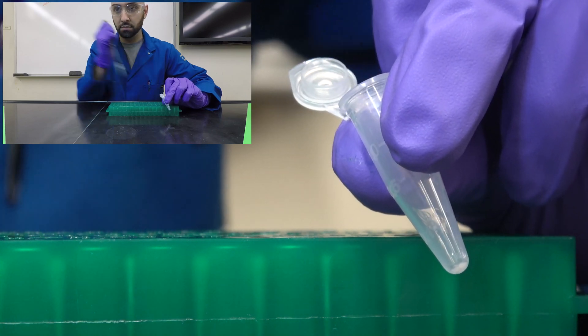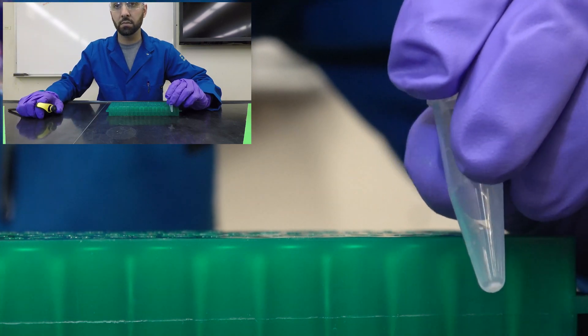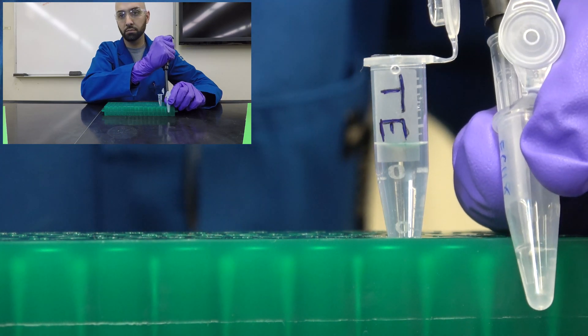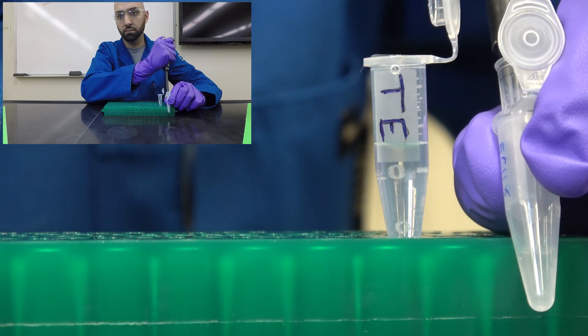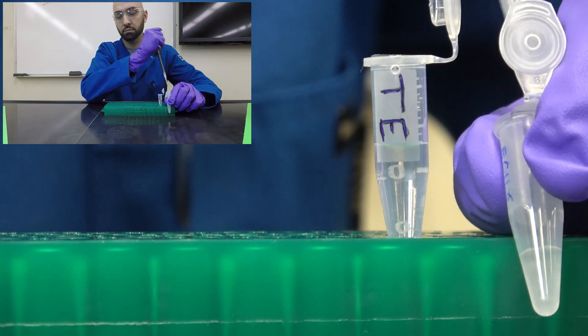Afterward, we can dissolve the DNA in TE buffer. TE is water with added TRIS for pH buffering and EDTA for cation sequestration. Many nucleases depend on metal cations for function so removing these out of solution helps mitigate nucleic acid degradation.